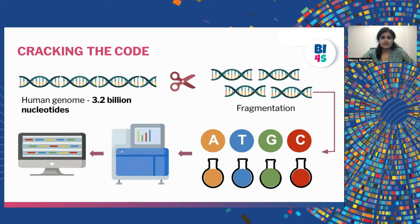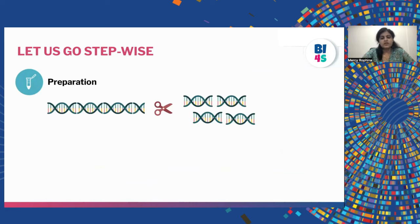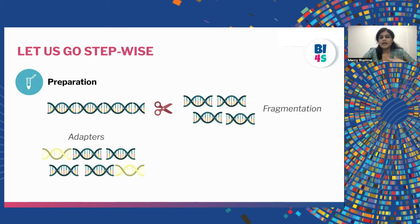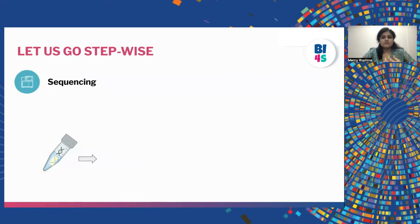Let us go step by step. The first step is the sample preparation step, in which we prepare our sample DNA. We have the human genomic DNA, which is very huge, so we perform fragmentation — we fragment the DNA into multiple smaller chunks. Then, to these fragments, we add some components essential for sequencing to occur, for example, adapters. Once all essential components are added, we perform amplification, meaning we make multiple copies of these fragments. Once amplification is done, our sample preparation step is complete.